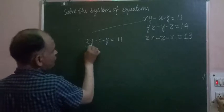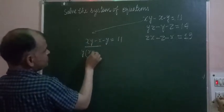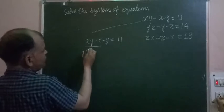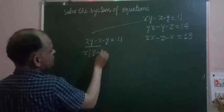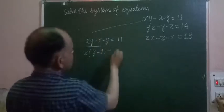We take common factors from this expression. Taking x common, we get x times (y - 1), and we have this remaining y term.